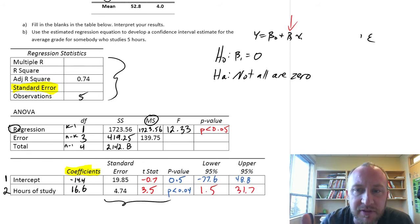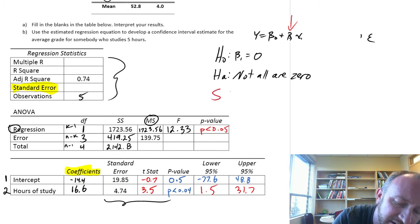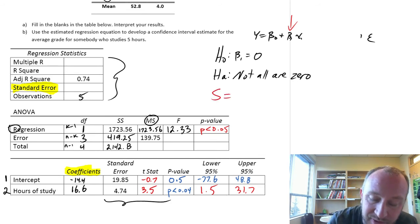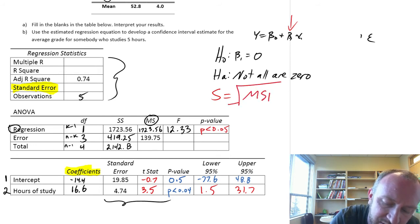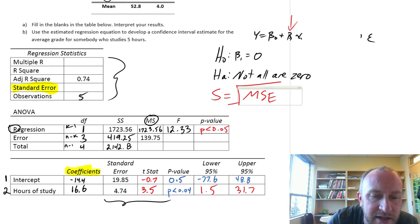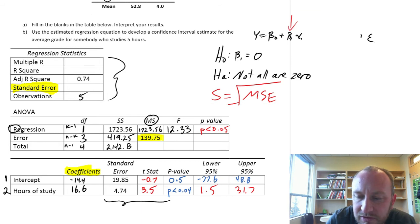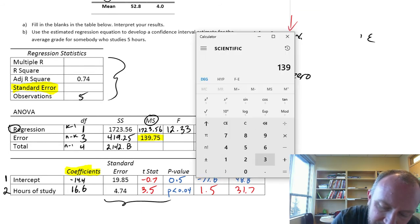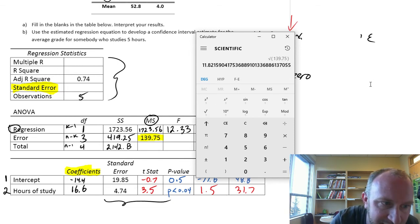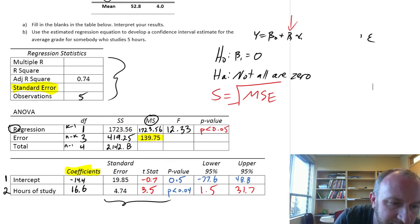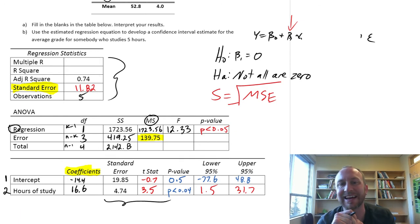Let's fill in the rest of our regression statistics here. So, we have our observations. Standard error. So, this standard error, this came up in an earlier video with the hypothesis testing. This standard error of the estimate is just the square root of MSE. And here we have MSE is right here. So, the square root of 139.75 square root is 11.8. Whoops, I need my pen back. So, 11.8 is our standard error of the estimate. Standard error of the regression is what we call that.